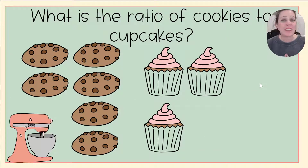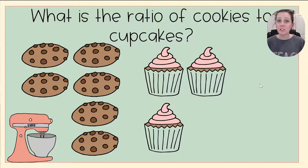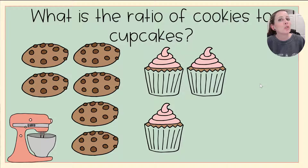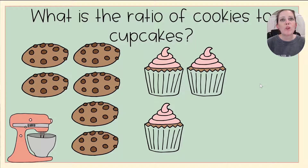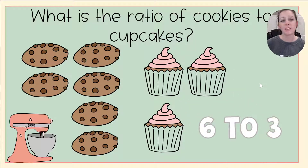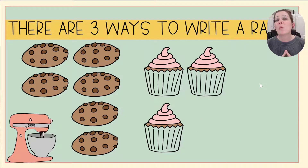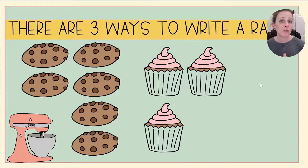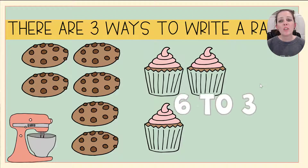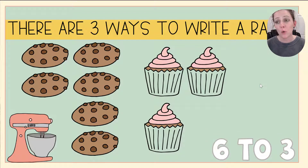Let's dive right in and answer this question: what is the ratio of cookies to cupcakes? Cookies comes first, so we count how many cookies we have — we have six cookies — and we're comparing that to how many cupcakes we have, which is three. So my ratio is six to three. There are three different ways to write ratios, and we just saw the first: we can write it with the word 'to' — six to three.